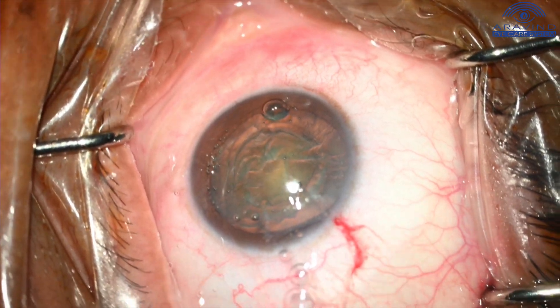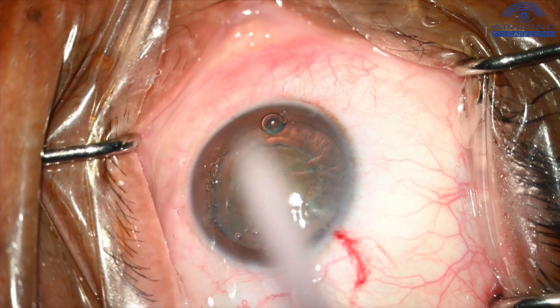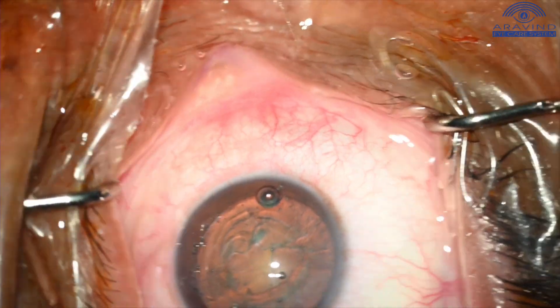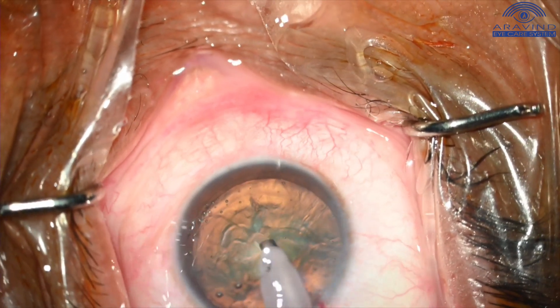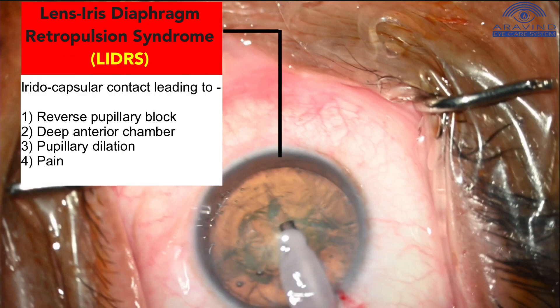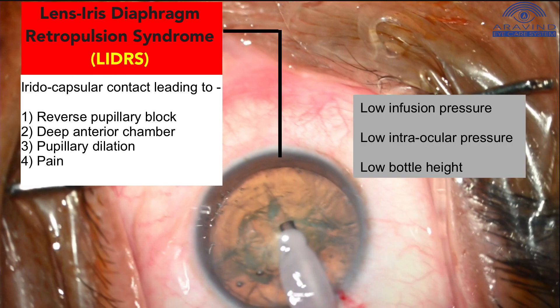High myopes have lower scleral rigidity. Therefore, with more infusion of fluid, the sclera gets stretched more readily. This causes pain as well as LIDRS syndrome. Lens iris diaphragm retropulsion syndrome, simply called LIDRS, is an iridocapsular contact leading to reverse pupillary block, deep anterior chamber, pupillary dilation and pain. To avoid pain and LIDRS, low pressure settings are preferred — low infusion pressure, low intraocular pressure, and low bottle height.